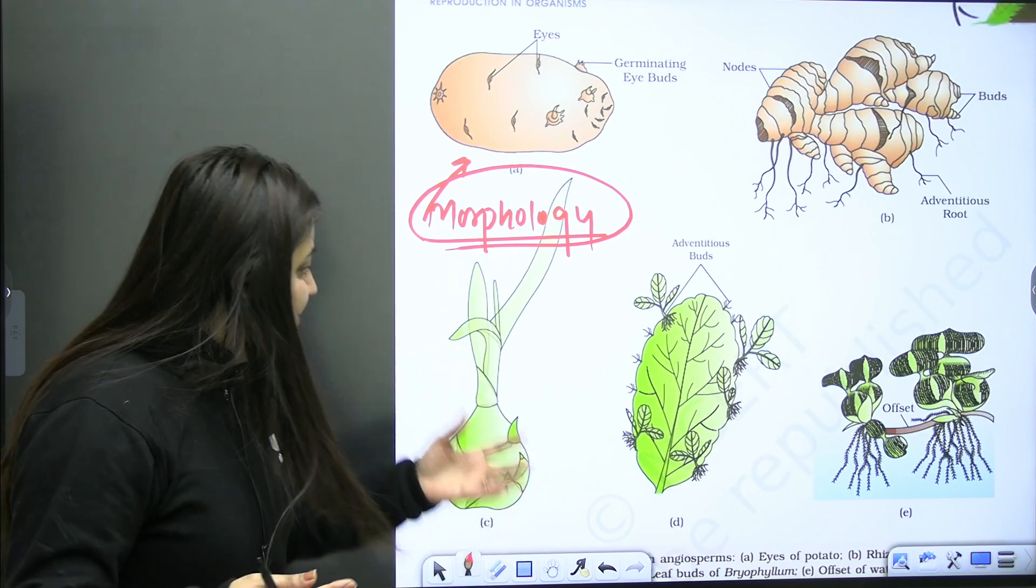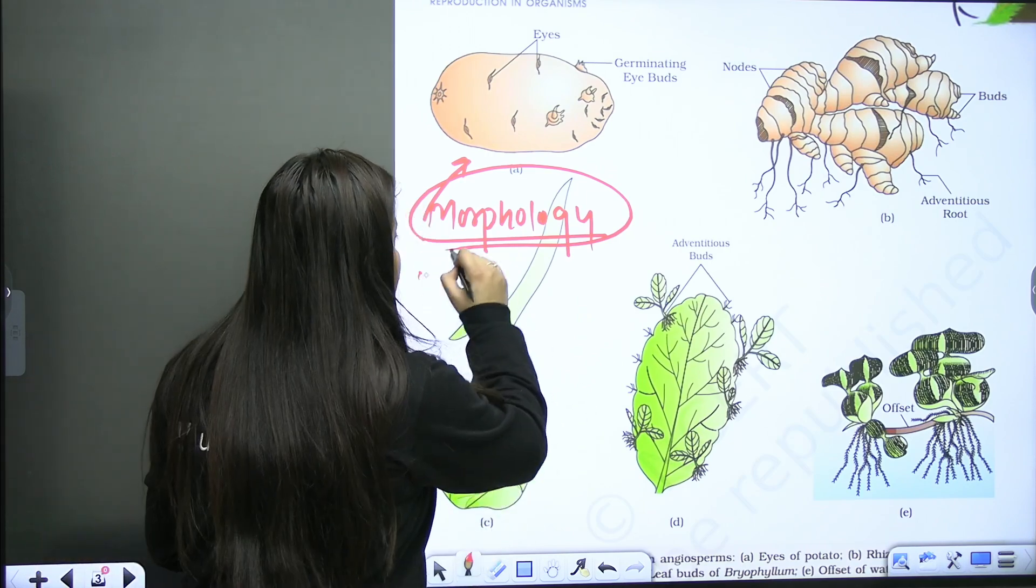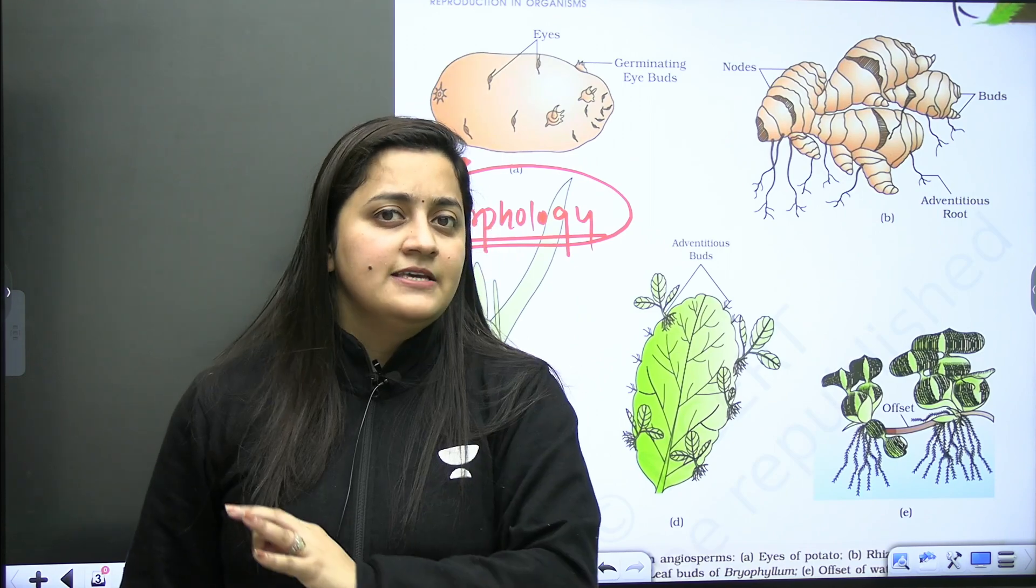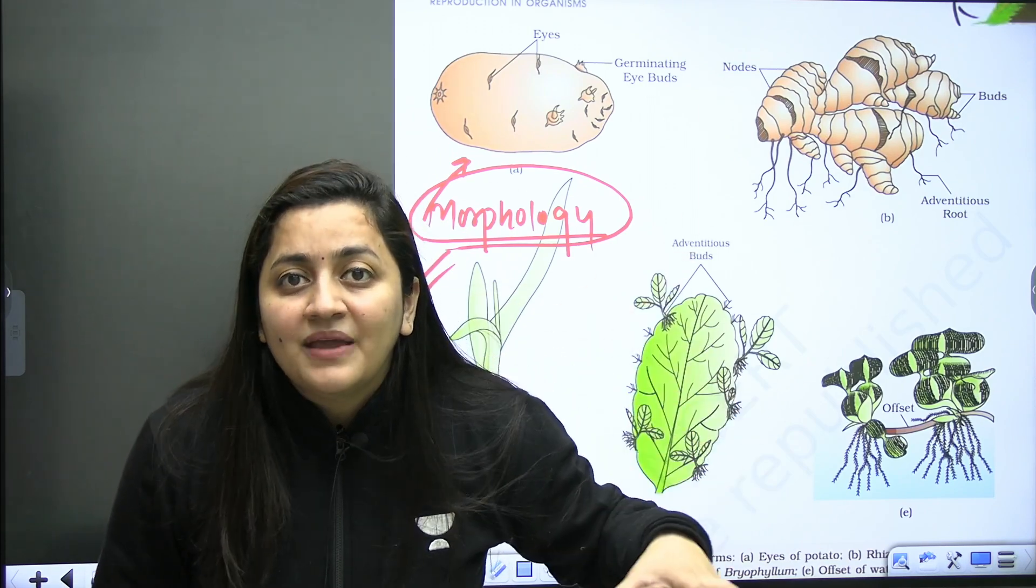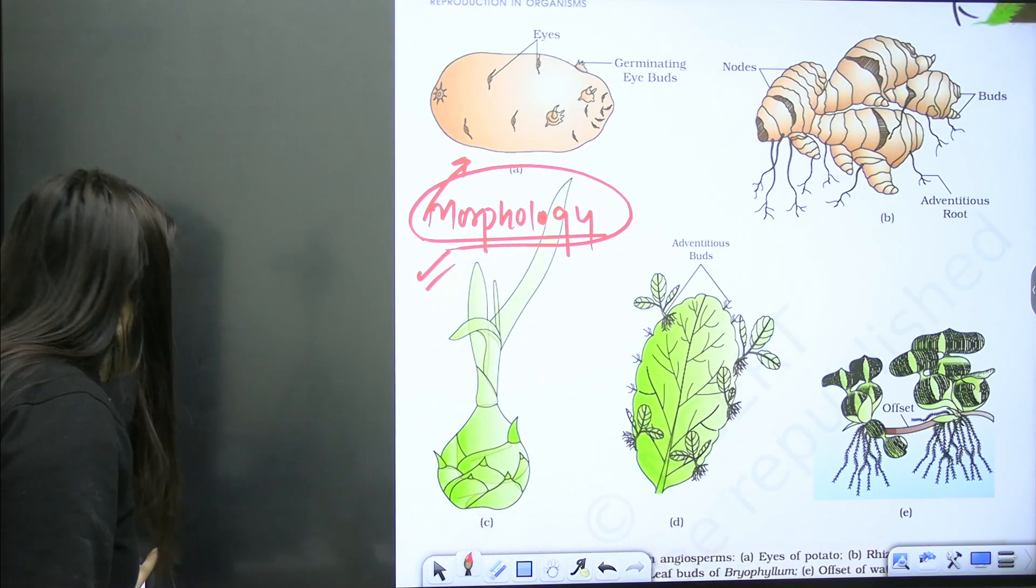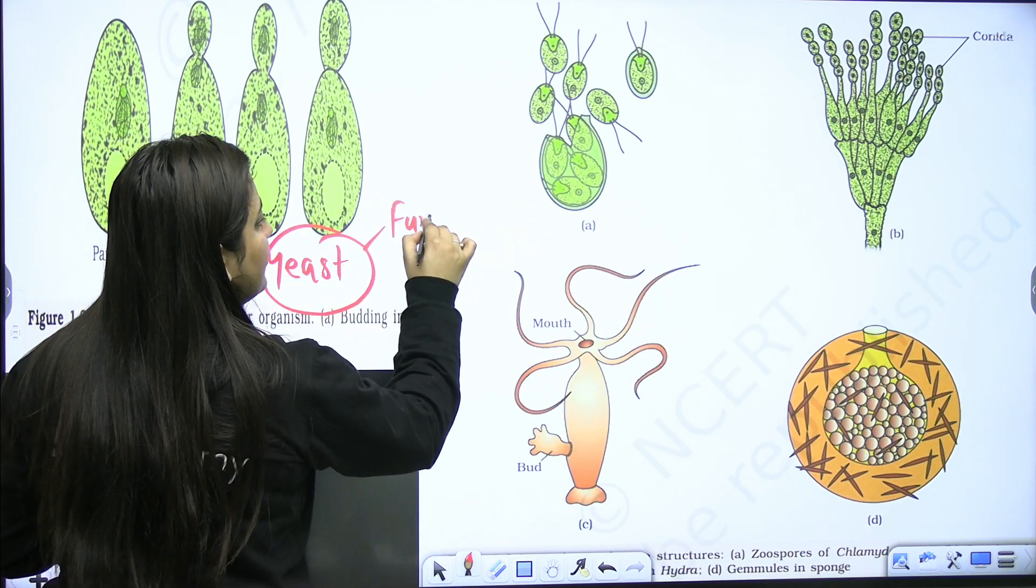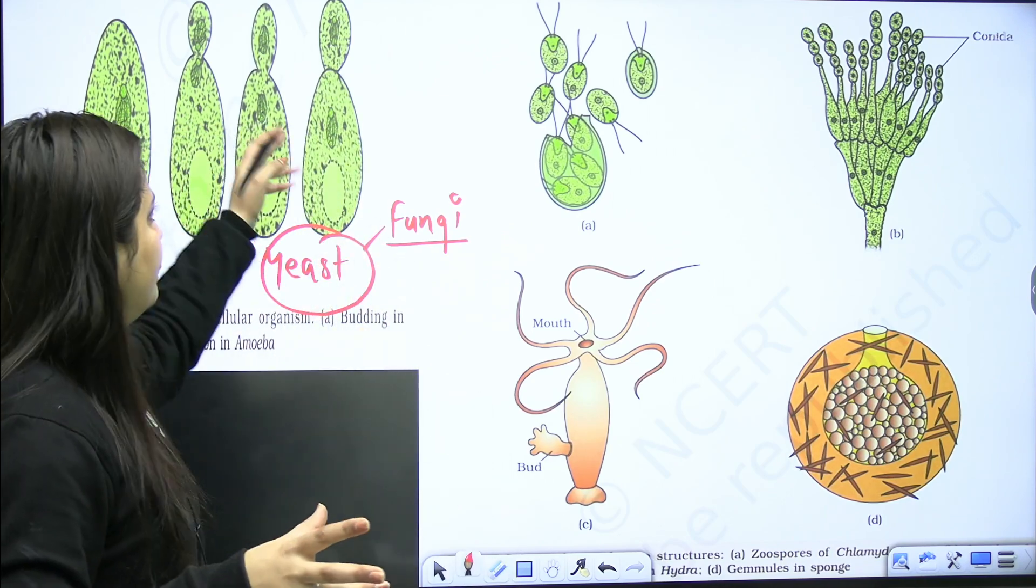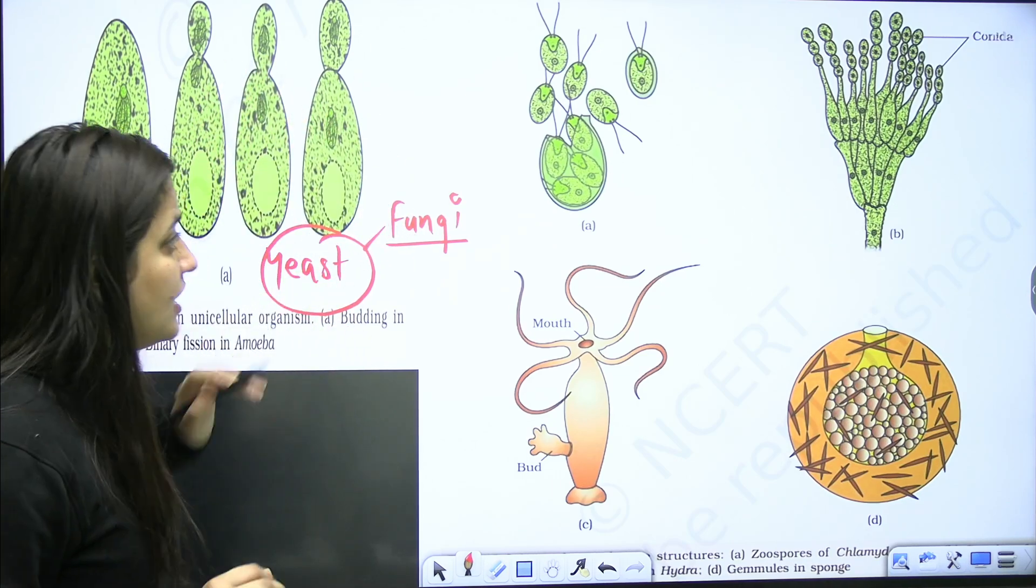Maybe when you see the NEET 2024 paper, there will be some questions which you will consider are from the deleted syllabus, but actually they are not. Everything is mixed. This part is in the deleted portion, but this part you are reading somewhere else indirectly. Rhizome is there, potato tuber is there, offset is there, adventitious buds are there. When you read morphology, please consider this part from reproduction in organisms.